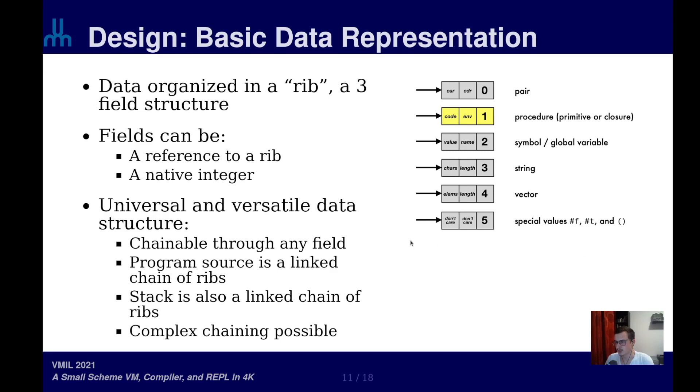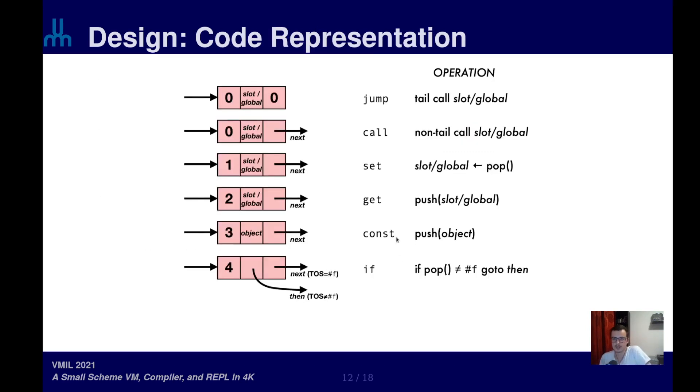And of course, Scheme objects within the system are also represented as RIBs. So for example, here we have the pair, which the first field will contain an arbitrary value. So it could be a native integer if it's a number, or it could be a RIB that refers to something else. And the second field will be a reference to a RIB. Of course, because a pair is a RIB, the second field will actually be a reference to a RIB. And as you can see, we don't use that many tags. We use tags in the third field to differentiate every element, but we could extend this with user-defined values, for example.